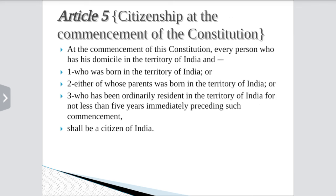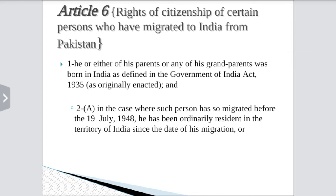Now let us see Articles 5 onwards. Article 5 deals with citizenship at the commencement of the Constitution. The people who were born in the territory of India, or either of whose parents were born in the territory of India, or who has been ordinarily resident in the territory of India for not less than five years immediately preceding such commencement, shall be citizens of India.